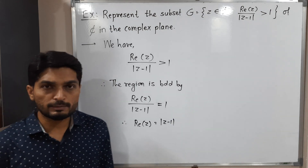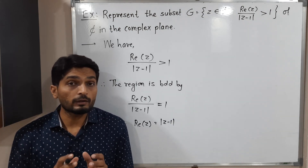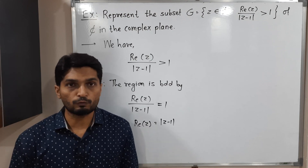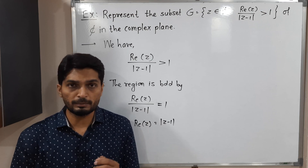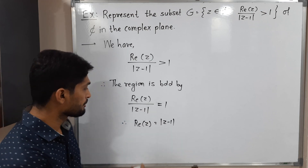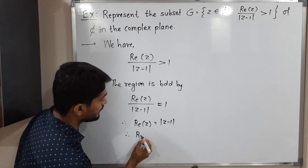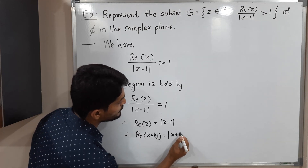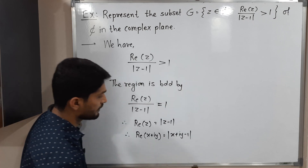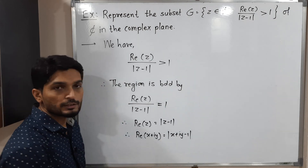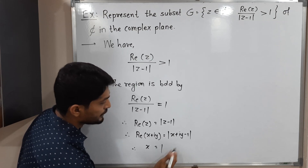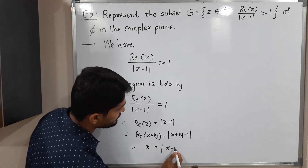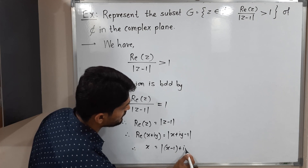When we solve such problems, we replace z by its Cartesian form, which is x plus iy. So replacing z by x plus iy, we get: the real part of (x + iy) equals the modulus of (x + iy) minus one. The real part of x + iy is simply x, and the expression inside the modulus has real part (x minus one) and imaginary part y.